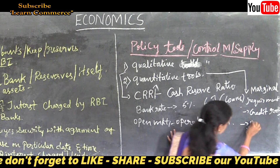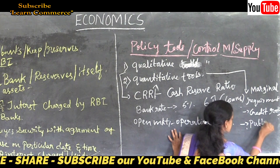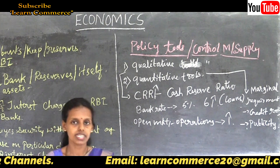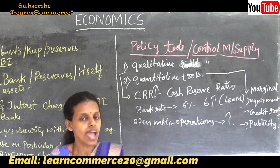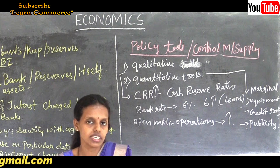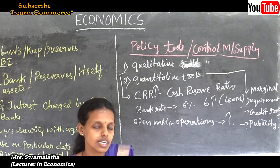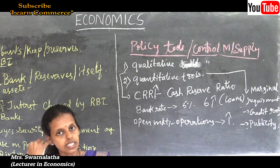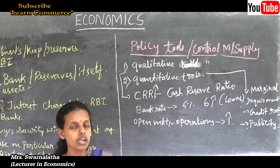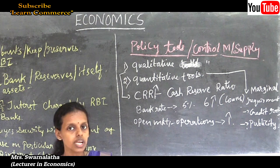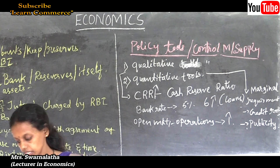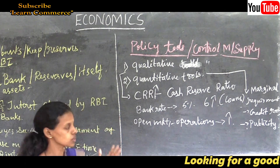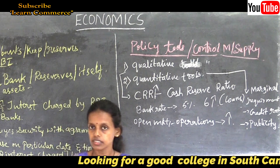Another quantitative tool is publicity. Banks with more publicity attract more customers and have better repayment capacity. RBI provides money to such banks at the existing rate of interest. RBI also issues direct action and uses other methods to control currencies in the economy.